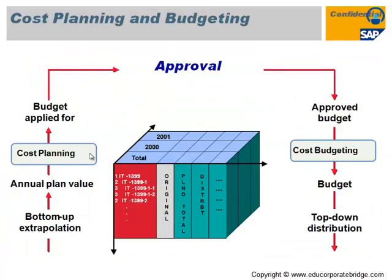This diagram shows plan versus actual. Planning starts at the bottom as exploration, then annual plan values and cost planning are done. Then a budget is applied, and once approval is received the budget is approved and distributed to lower-level WBS elements. Budget can be controlled year-wise — for example, over a 6-year project span — and the remaining balance budget at the end of a financial year can be carried forward to the next financial year in SAP Project System.